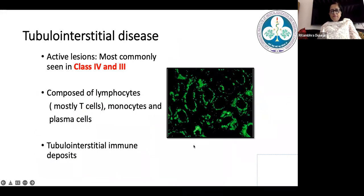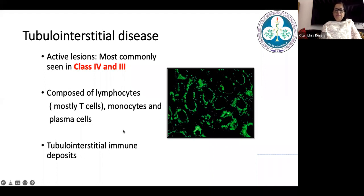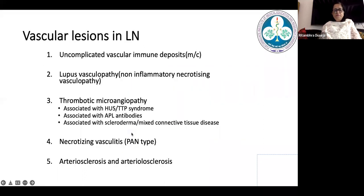Tubular interstitial disease is generally seen with class three or four. The cells tend to be mostly T cells and monocytes. You may or may not see immunofluorescence positivity — even in its absence, the disease is labeled as active tubular interstitial disease.